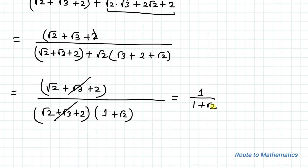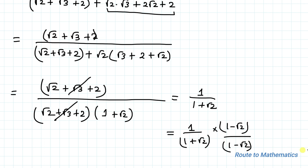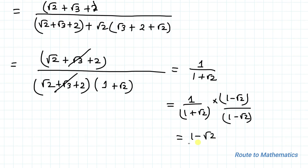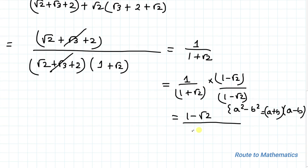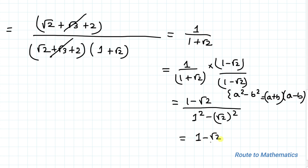Since we have a radical value in the denominator, we need to rationalize it. For rationalization, we multiply 1 over 1 plus root 2 by 1 minus root 2 in both the numerator and denominator. So we have 1 minus root 2, divided by 1 plus root 2 times 1 minus root 2. We apply the algebraic identity a squared minus b squared equals a plus b times a minus b, giving us 1 squared minus root 2 squared, which is 1 minus 2.